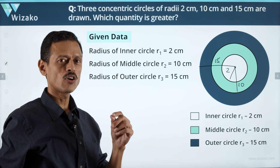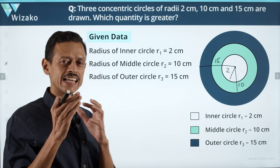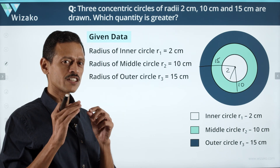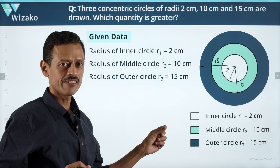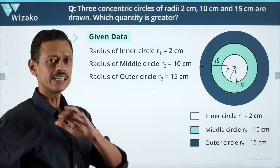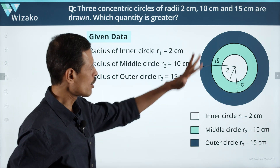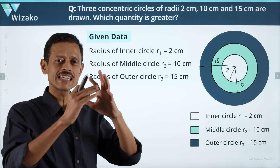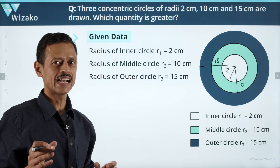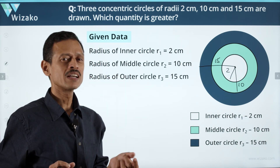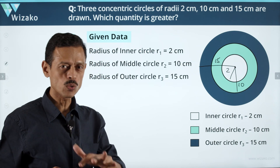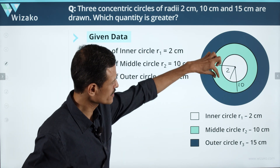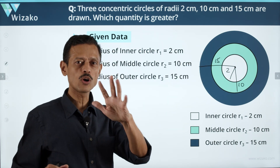We are computing the ratio of areas of different regions. The first thing to do with the given data is to compute the areas of all three circles — inner, middle, and outer — and keep those handy. We'll finish that off, then get into Quantity A and find out which regions we're working with.